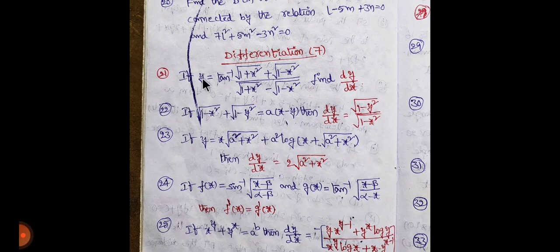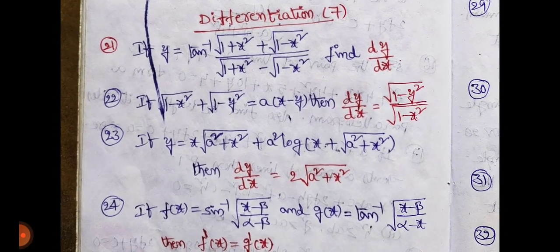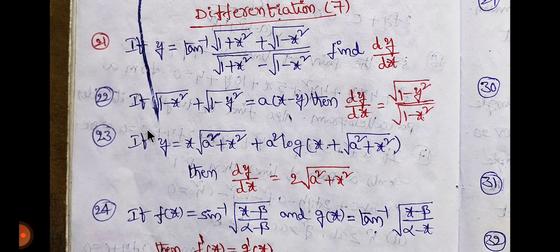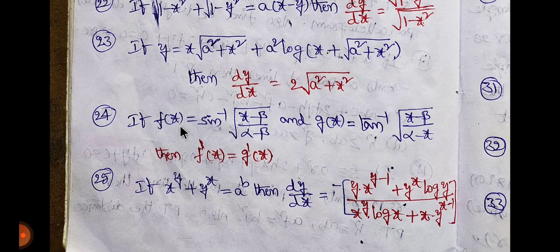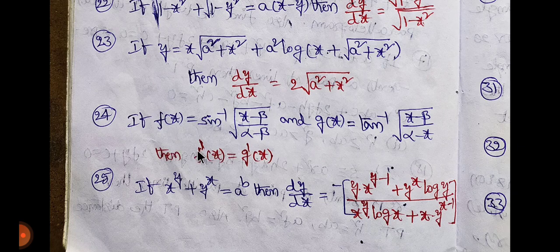y equals tan inverse of root of 1 minus x squared plus root of 1 minus y squared over a times x minus y. The 3rd and 4th. f dash of x equals g dash of x - 2 derivative, equal and 4. Automatic derivative is equal; 4 behind bars is equal.